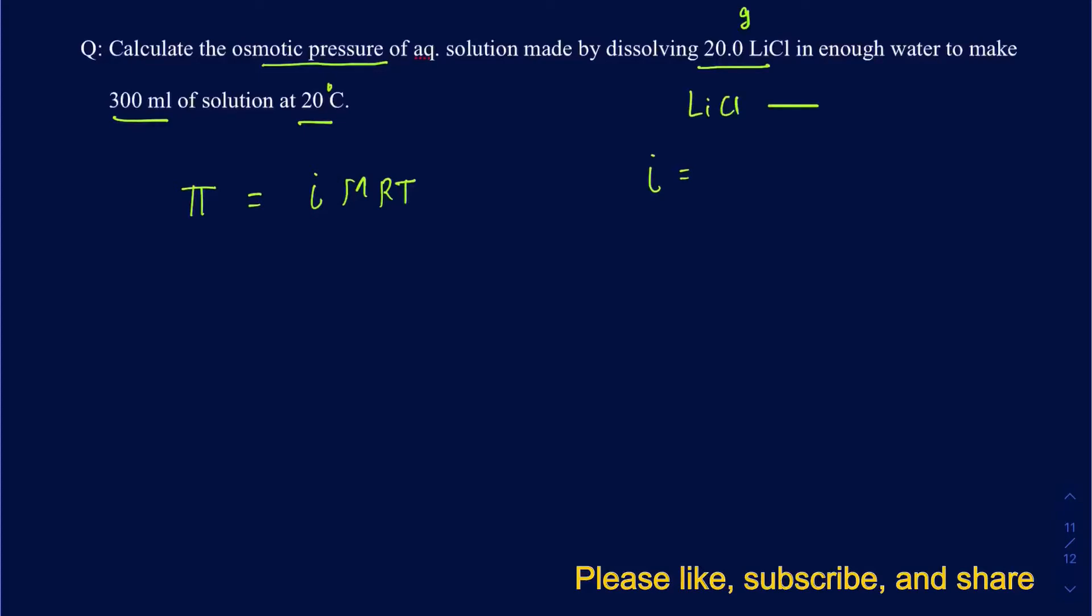So remember, the expected value for the LiCl is going to be 2 because it gets broken into Li+ and Cl- aqueous. And it may not be exactly 2 when it comes to the measured value, but you're always going to use an expected value unless told otherwise. So it's just going to be 2 here.